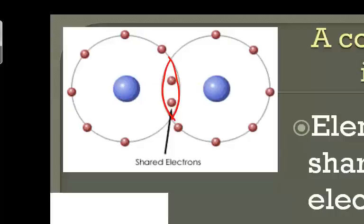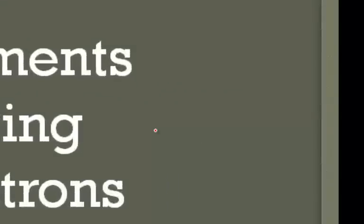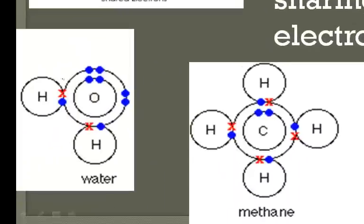This is different from an ionic bond where we would have one atom like lithium that gives up an electron to be claimed by chlorine. Here we see sharing of electrons.